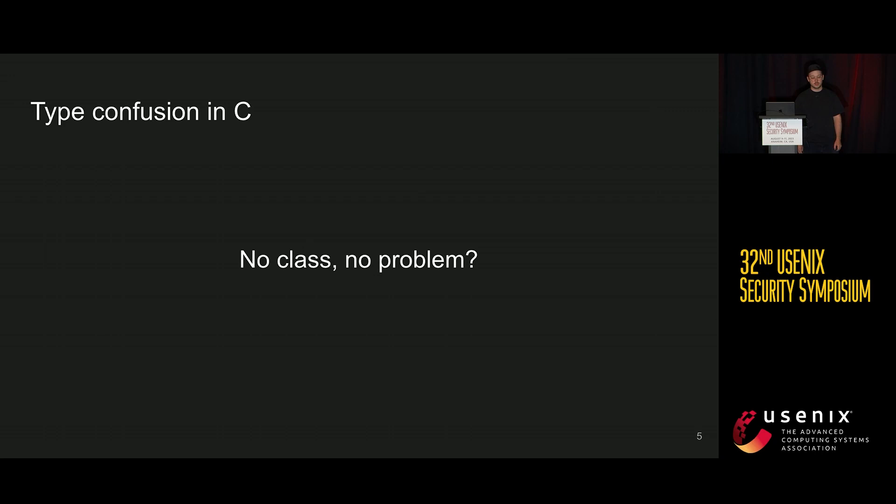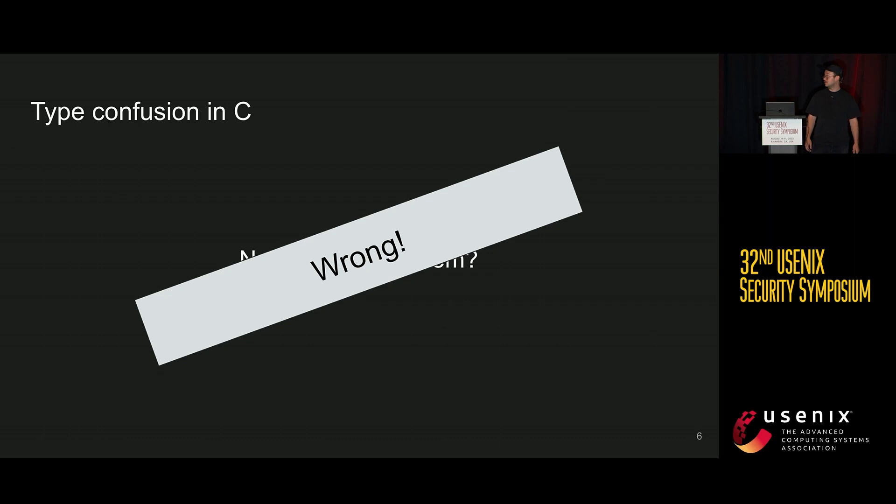Now you might think: type confusions in C — we don't have classes, we don't have object-oriented programming, so none of this is an issue, right? Today I'm going to show you that this is actually not the case.